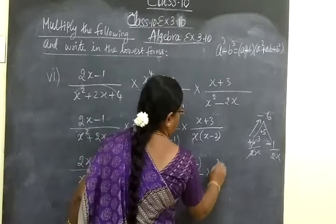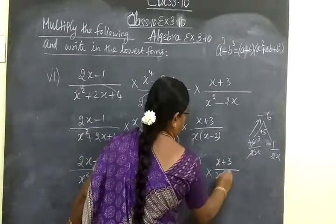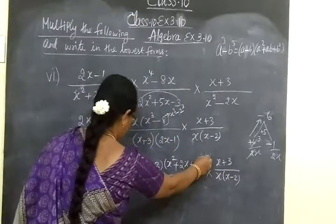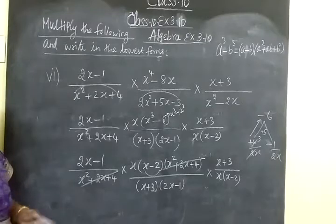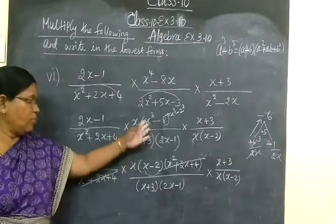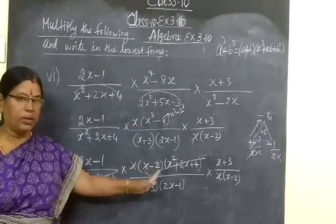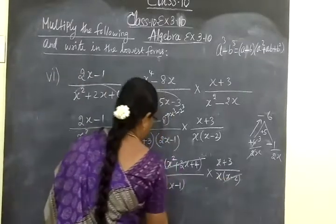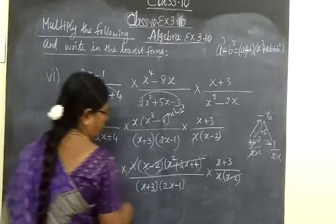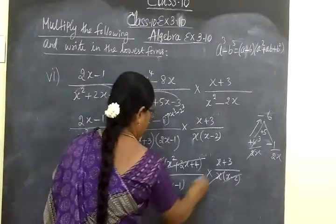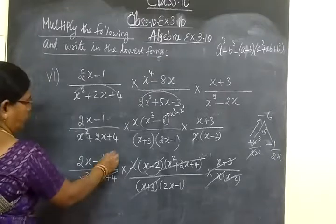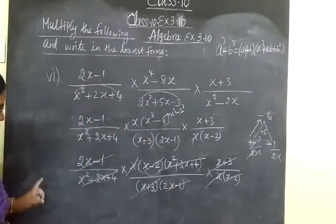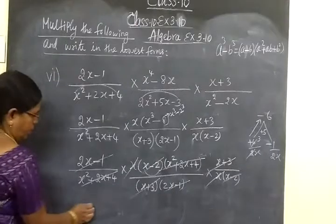Now x plus 3 by x bracket x minus 2. Now easily you can cancel this one, this one. Everything getting cancelled. All the terms cancel, so the final answer is 1. Let us see the answer. Yes, good. So the answer is 1. The answer is correct.